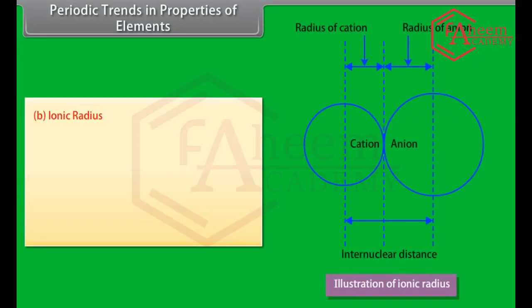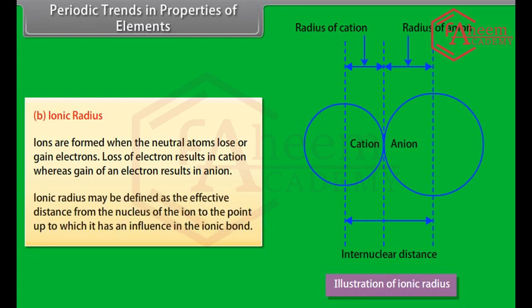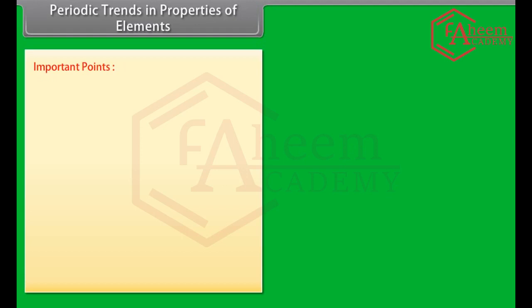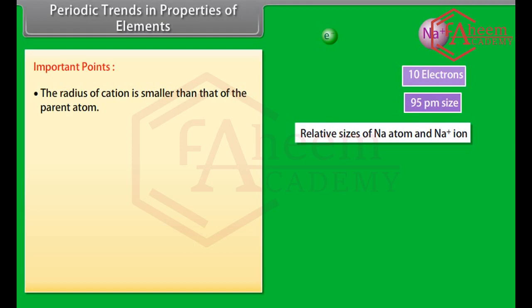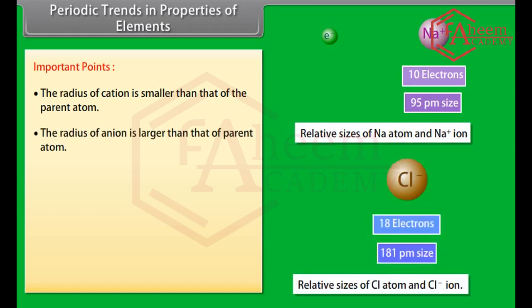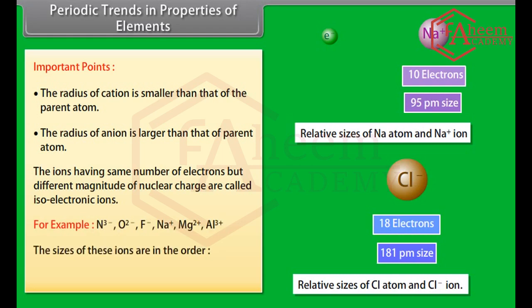Ionic radius: Ions are formed when neutral atoms lose or gain electrons. Loss of an electron results in a cation, whereas gain of an electron results in an anion. Ionic radius may be defined as the effective distance from the nucleus of the ion to the point up to which it has an influence in the ionic bond. Important points: the radius of a cation is smaller than that of the parent atom; the radius of an anion is larger than that of the parent atom. Ions having the same number of electrons but different nuclear charge are called isoelectronic ions.